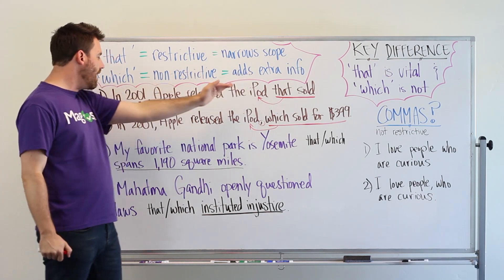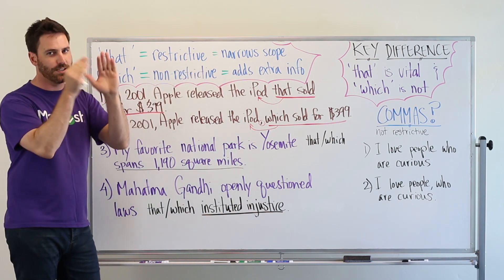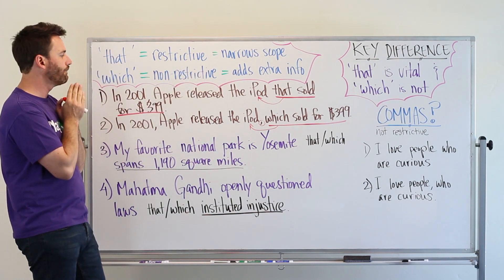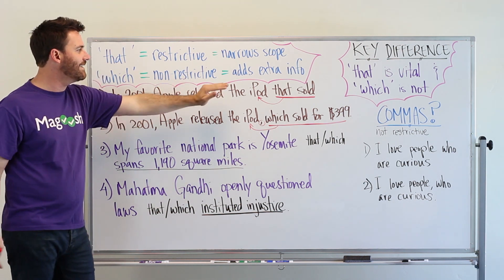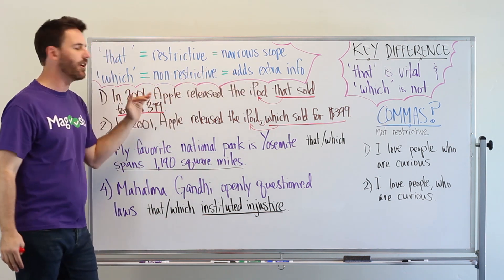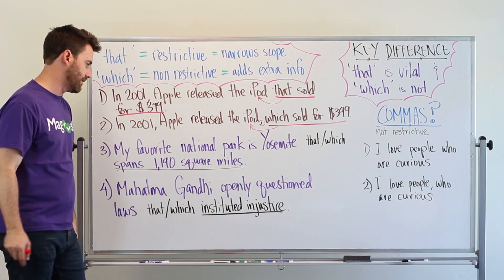Whereas here we're narrowing the scope, we're narrowing in on a specific type of iPod. And so that is essential, that sold for $399. That information is essential to the sentence.